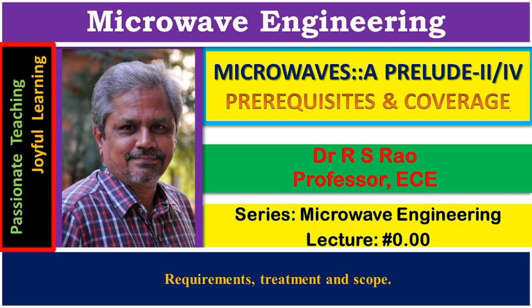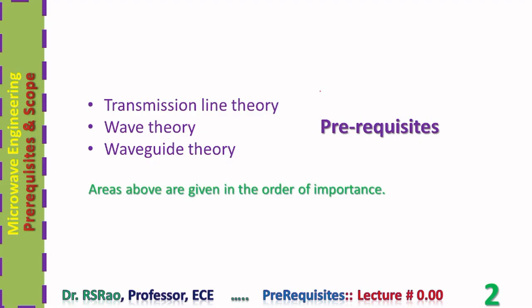Apart from introducing those prerequisite areas, we also consider the coverage and scope of the subject microwave engineering when studied as part of graduate coursework. After introduction, the coursework usually starts with passive components, active components, sources, characterization, and measurements using bench setup. The three primary prerequisites are: transmission line theory, wave theory, and wave guide theory.